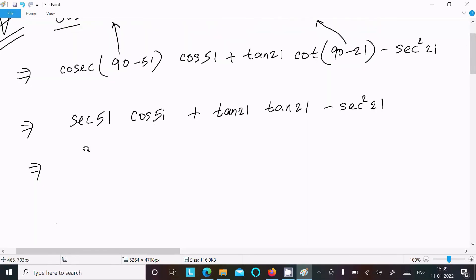Now the next is here, sec we can write as 1/cos 51°, and here cos 51°. Then tan 21° × tan 21°, that is equal to tan² 21° - sec² 21°.